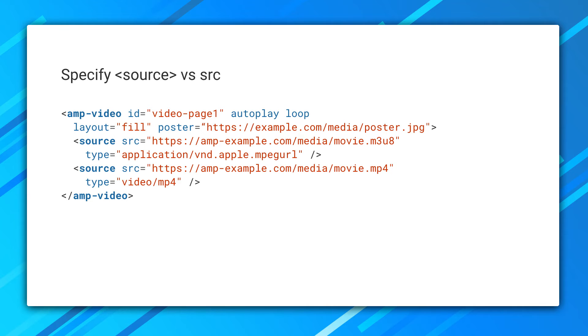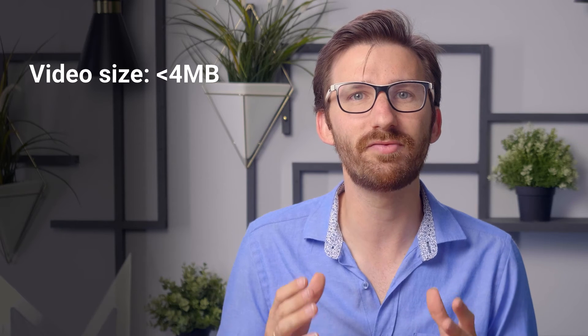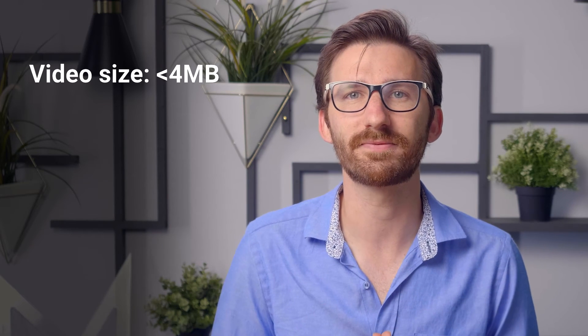Different browsers support different video formats, so be smart about which version of the video you load. You can use the src attribute to load the same video in all cases, but it's better to use source child elements. By using the source element, you can specify the video mime type as well as add more video sources. For optimal performance, aim to provide videos that are no larger than 4 megabytes. Consider splitting a long video over multiple pages and try to avoid particularly large videos on the cover page.